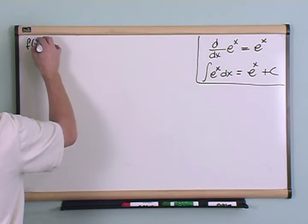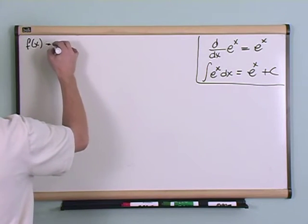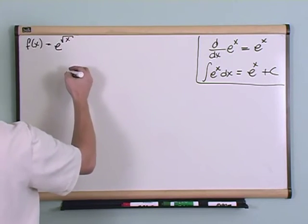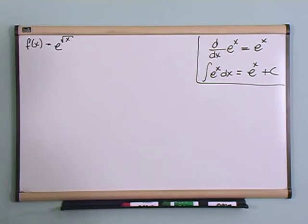What if you have f of x is equal to e to the square root of x. And they say, find the derivative. What's the derivative of this?